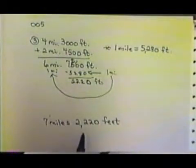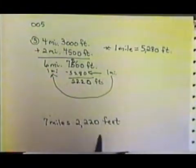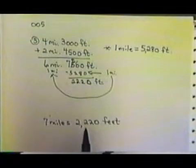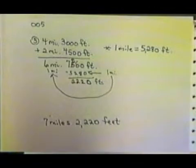And we'd want to be sure that our 2,220 was always less than this conversion back up here. If we had more than 5,280 feet left, then we'd need to send another mile over there with the 6 miles.